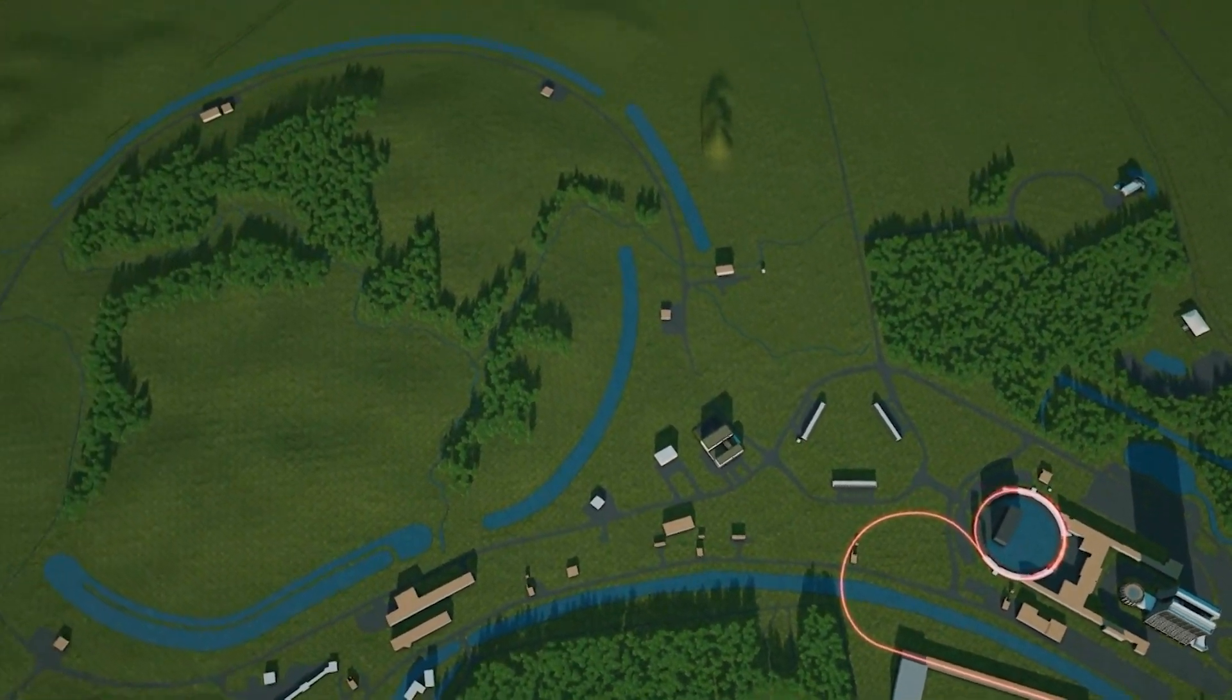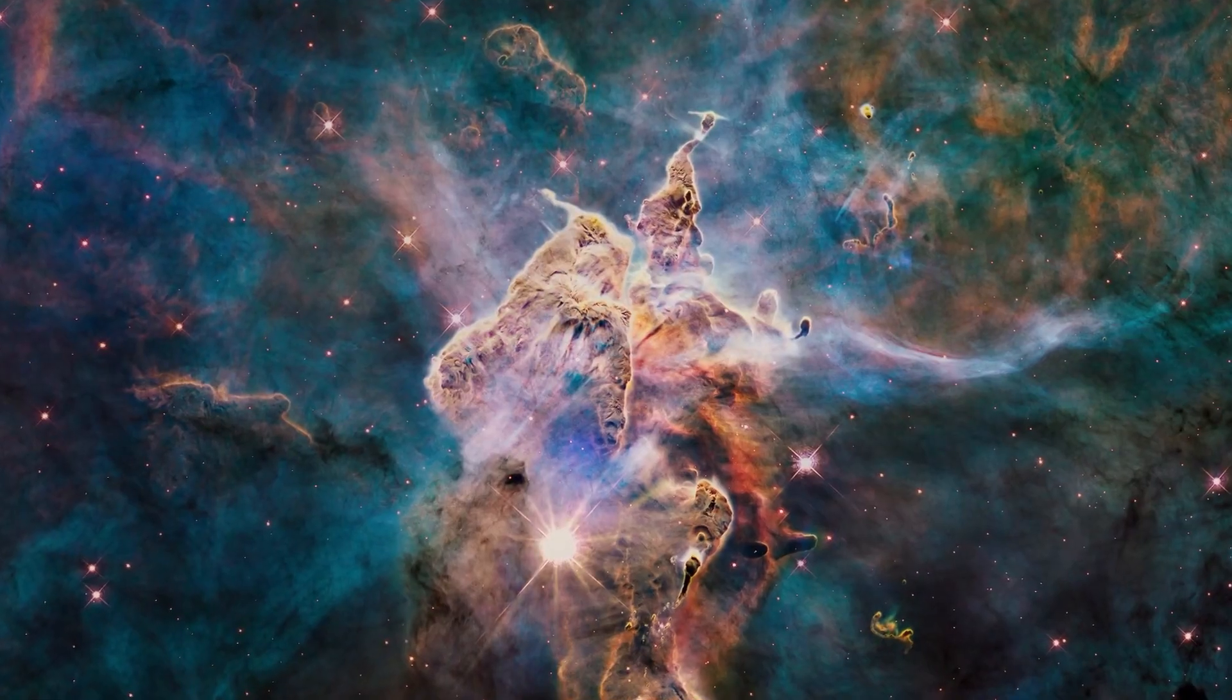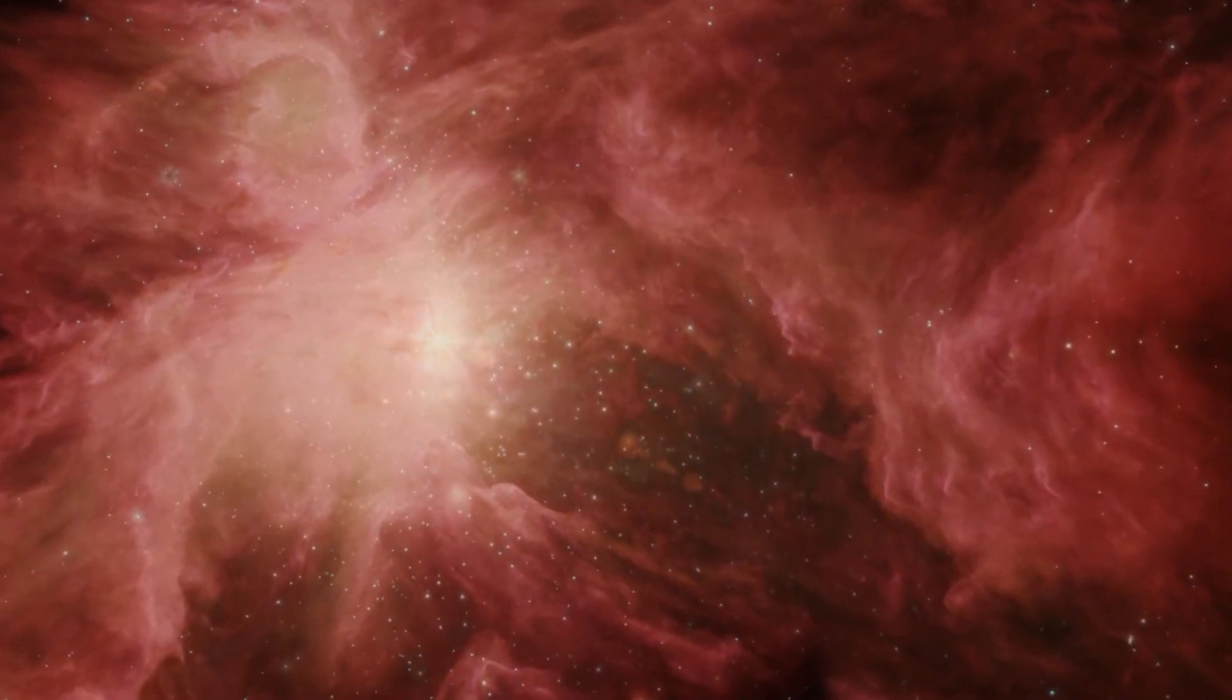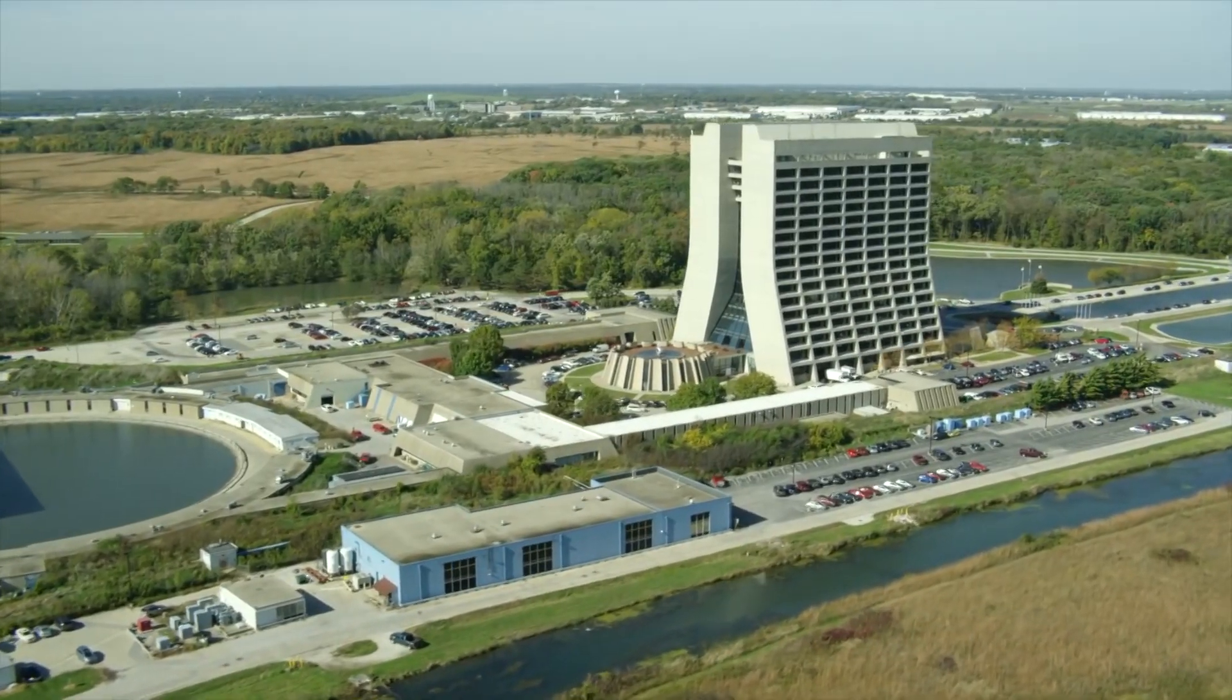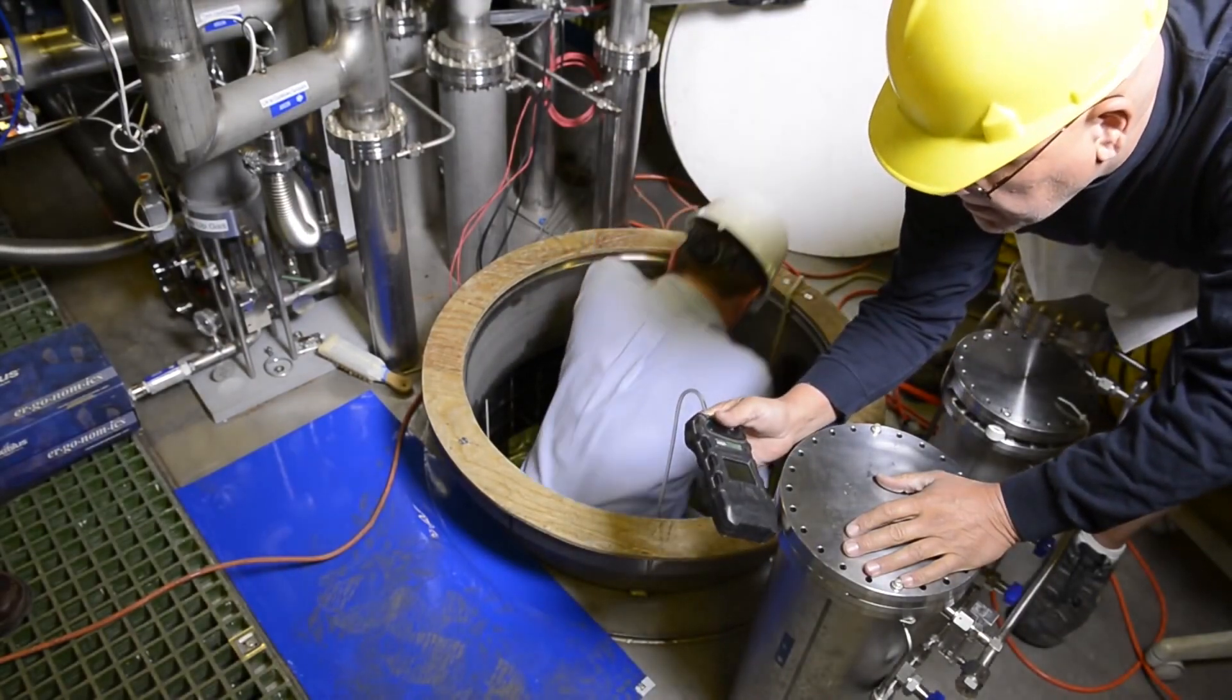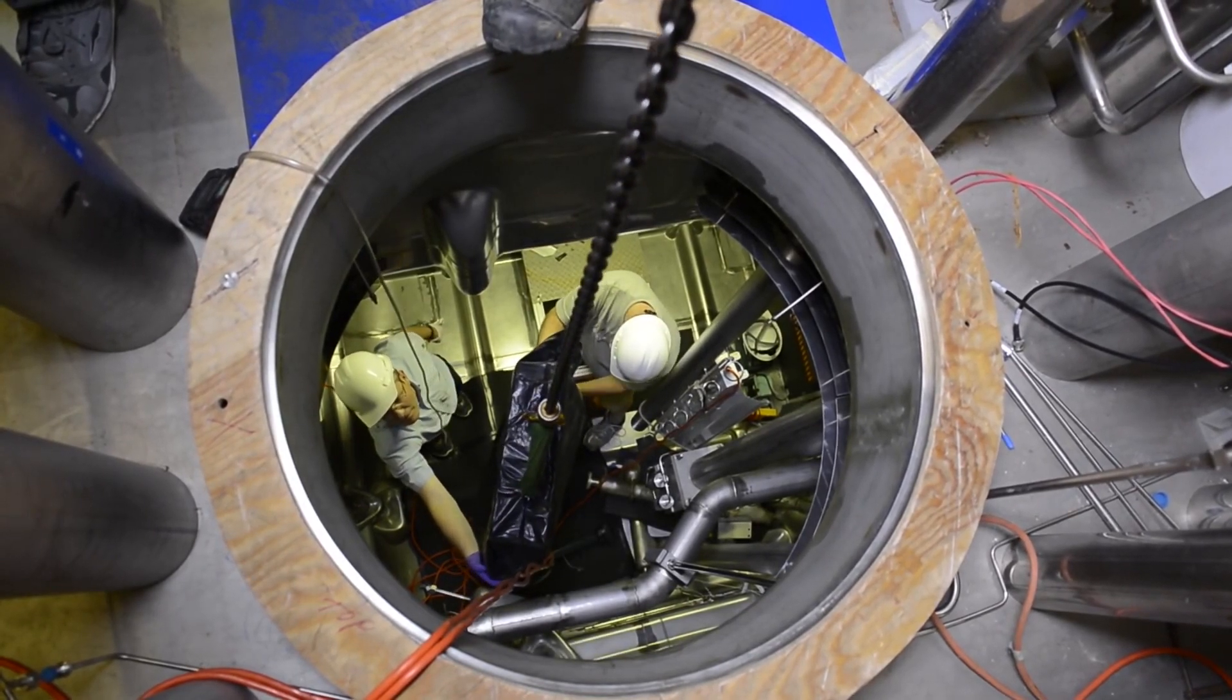DUNE isn't only a scientific venture—it's a groundbreaking marriage of engineering and physics designed to unravel some of the universe's most profound mysteries. But how exactly does this incredible experiment operate? Let's break it down. It all starts at Fermilab, just outside Chicago, home to one of the world's most sophisticated particle accelerators. This facility generates the most intense neutrino beam ever created.